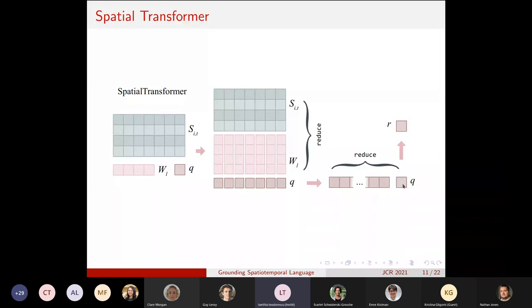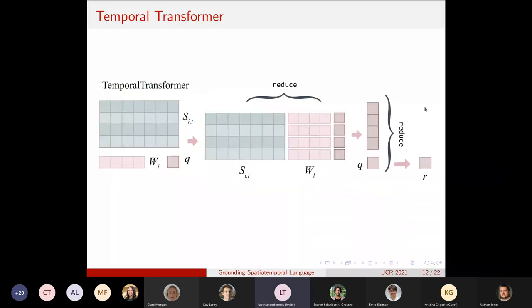So this produces, after the rounds of self-attention, a final vector which is of the same length as the number of time steps in our episode. And this is queried again, so reduced again with another transformer with different parameters to produce the final prediction token R here, which is used for predicting if the label is true or false.